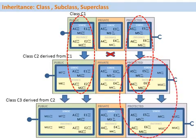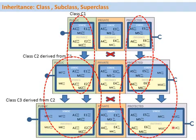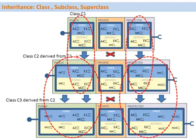The public and protected section is fully inherited to class C3 from class C2, and apart from the inherited section, class C3 can again have its own additional components. It is important to understand that the inheritance for class C3 also contains the components of class C2 which have been inherited from class C1.